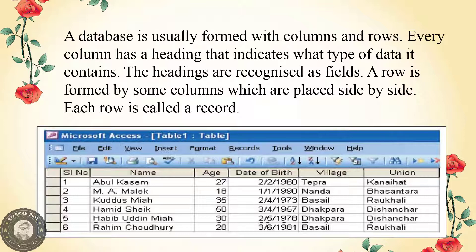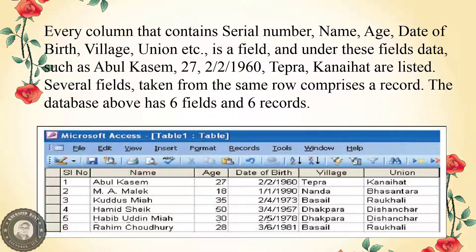A database is usually formed with columns and rows. Every column has a heading that indicates what type of data it contains. These headings are recognized as fields. A row is formed by some columns placed side by side, and this row is called a record. Every column that contains serial number, name, date of birth, village, union, etc. is a field. Under these fields, data such as Abul Kasem, 27/2/1960, Tepra, Kanaihat, are listed.